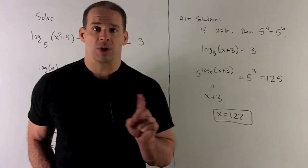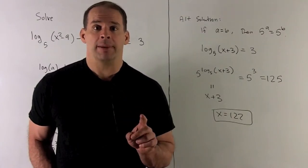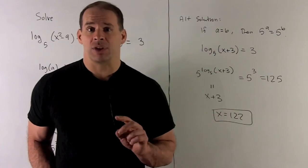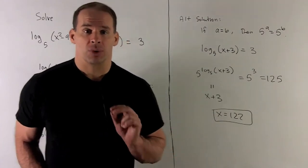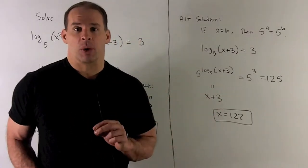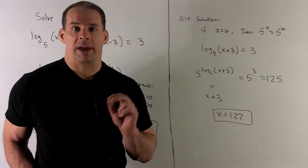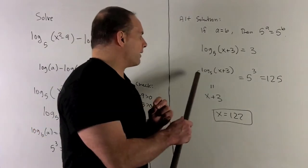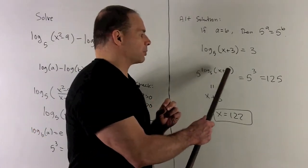So if I have two numbers equal to each other, say a equals b, then 5 to the a is going to be equal to 5 to the b. So we're going to take this equation and put them as the exponents over 5. So what am I going to get? So here we'll have 5 to the log 5 of x plus 3.